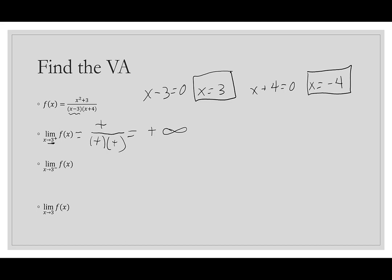On the left side of 3, we use a number slightly less than 3, like 2.99. The numerator (2.99² + 3) is still positive. But 2.99 - 3 is negative, and 2.99 + 4 is positive. So positive over (negative × positive) gives negative — the limit as x → 3⁻ is negative infinity. Overall, the limit does not exist.